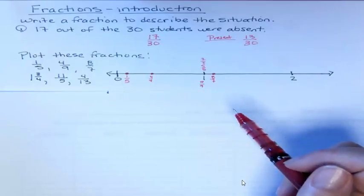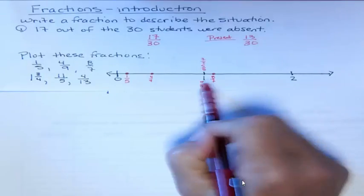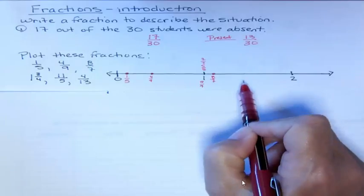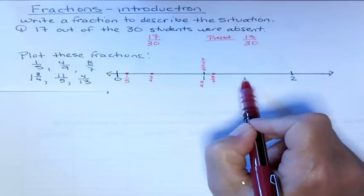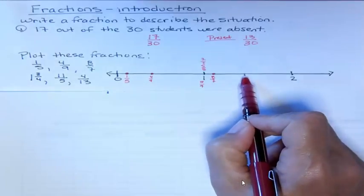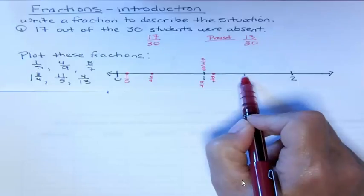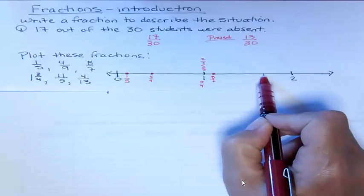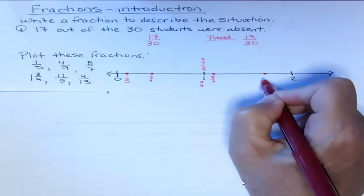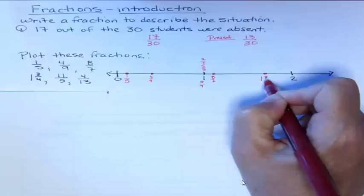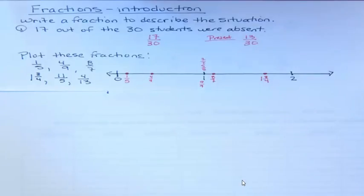What about one and three-fourths? Well, here's one, here's two. Let's say halfway between is right here. Then three-fourths is halfway between half and the next number, so somewhere in here. Notice when I plot these numbers, I put a dot. That's a coordinate point, putting a coordinate point on the number line for where these fractions should go.